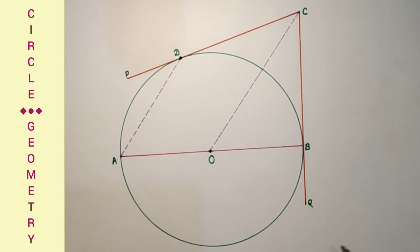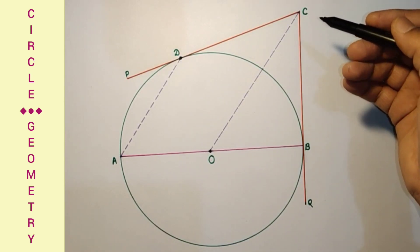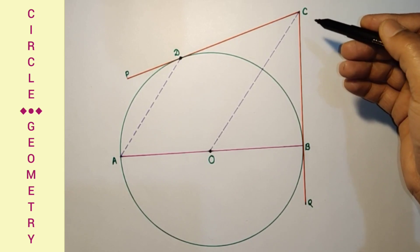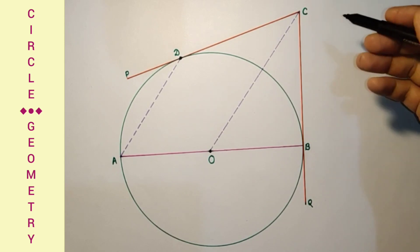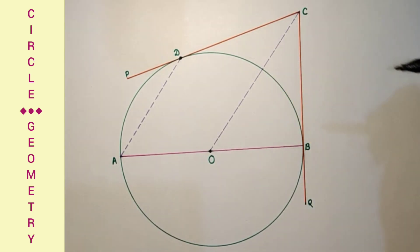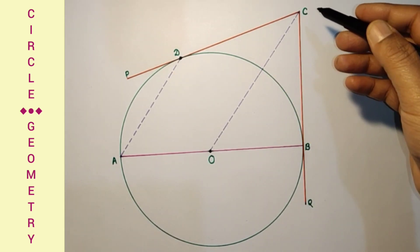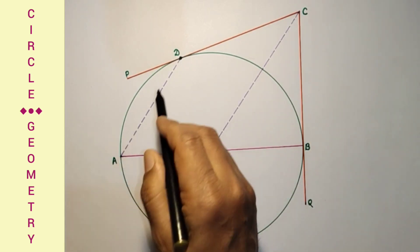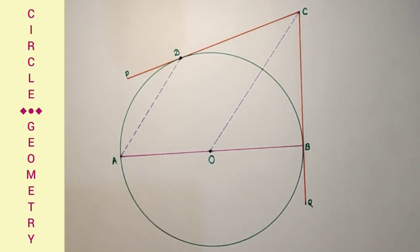In this question we are given that AB is a diameter of the circle with center O. C is the exterior point, an outside point, and from this point CQ and CQ are tangents drawn which touch this circle at B and at D respectively. O is the center of the circle.